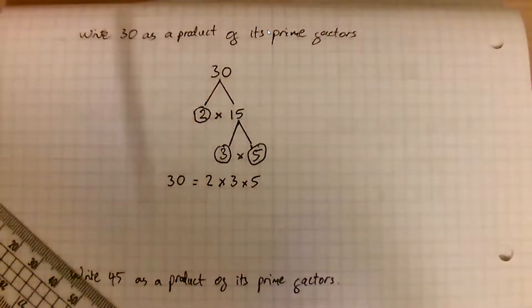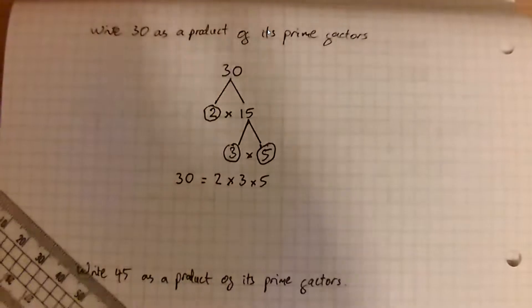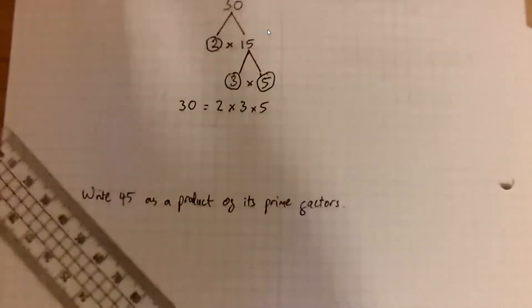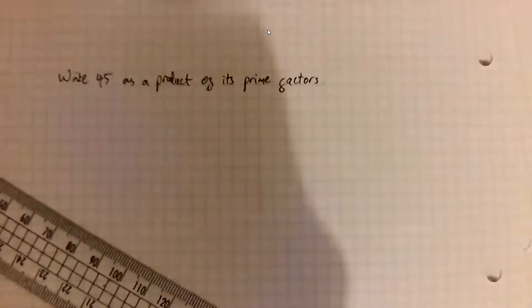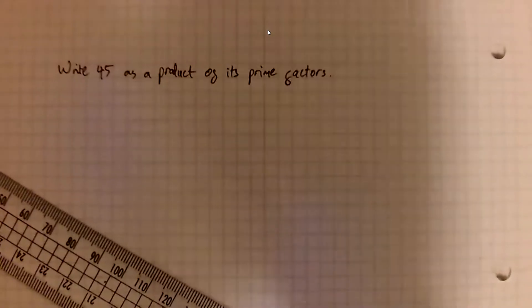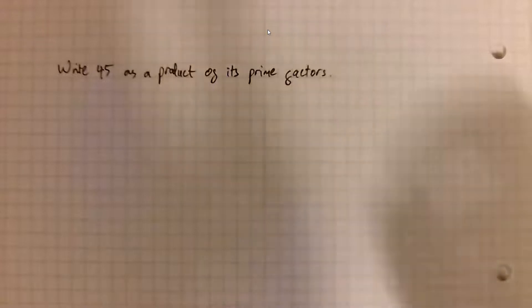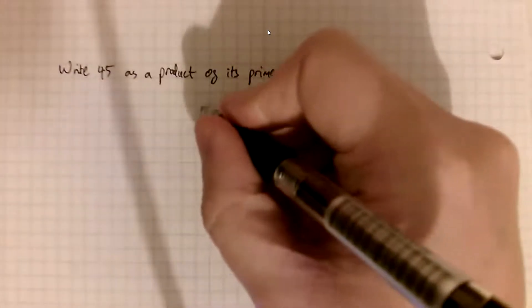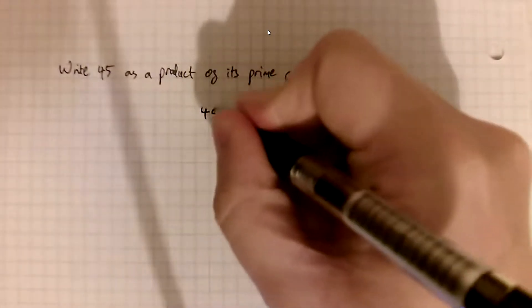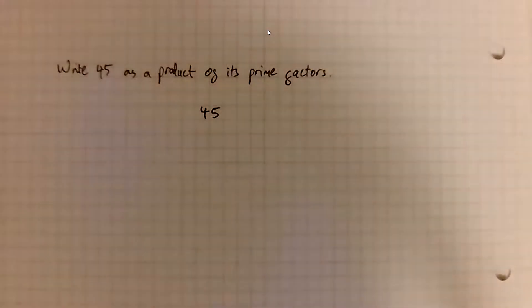So that is how you answer one of these questions. Pause and rewind if you need to repeat any of these steps. If not, what the rest of us are going to do is now have a look at this next example. I'm just going to move my camera. There we go. Writing 45 as a product of its prime factors. So we start off by writing our total 45, our final amount.